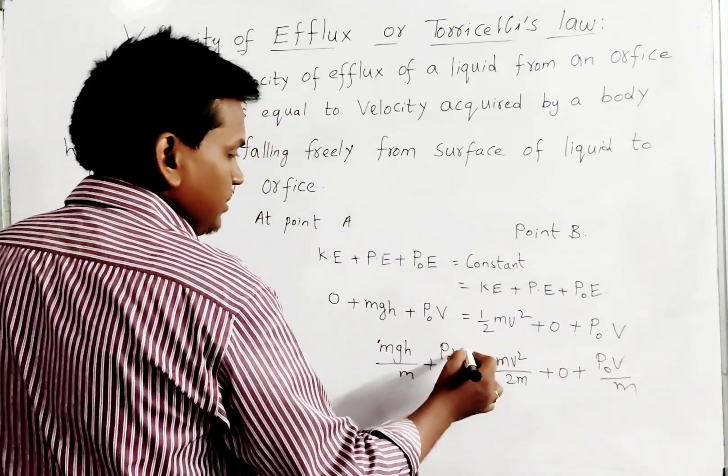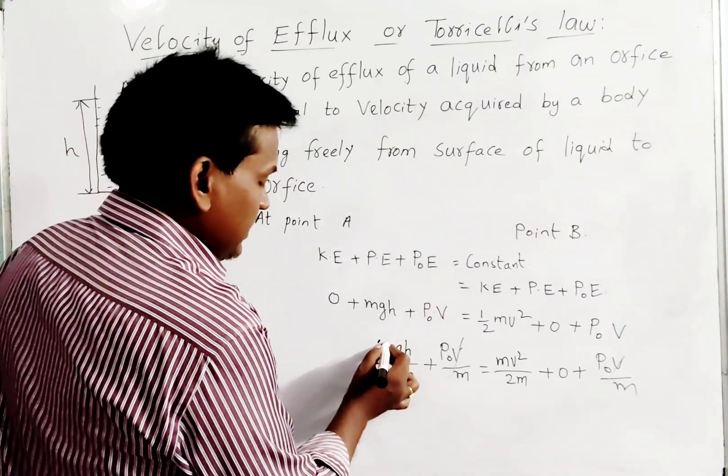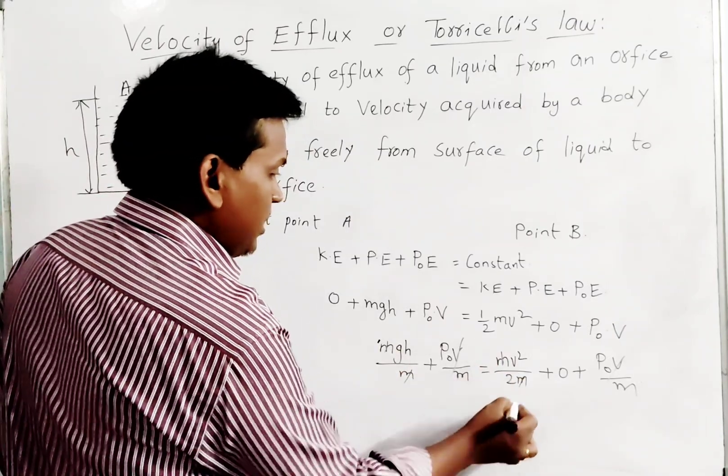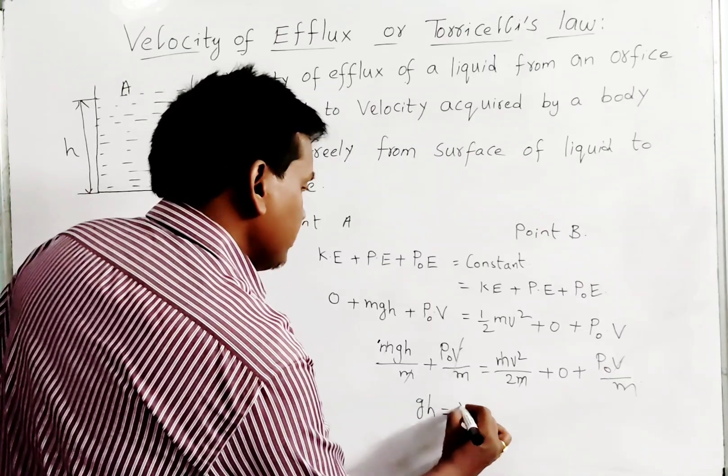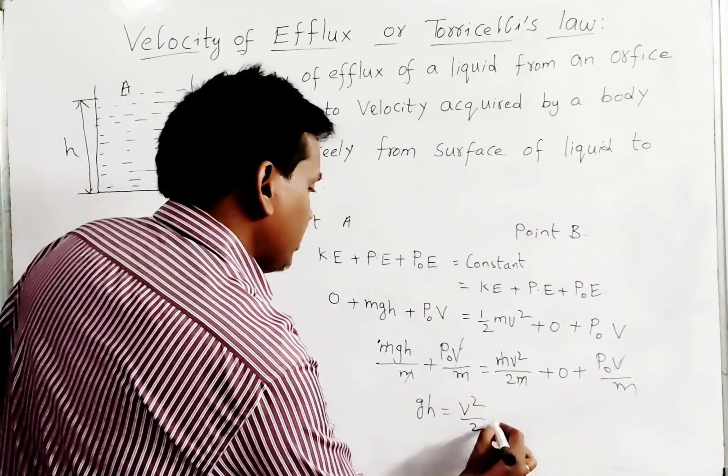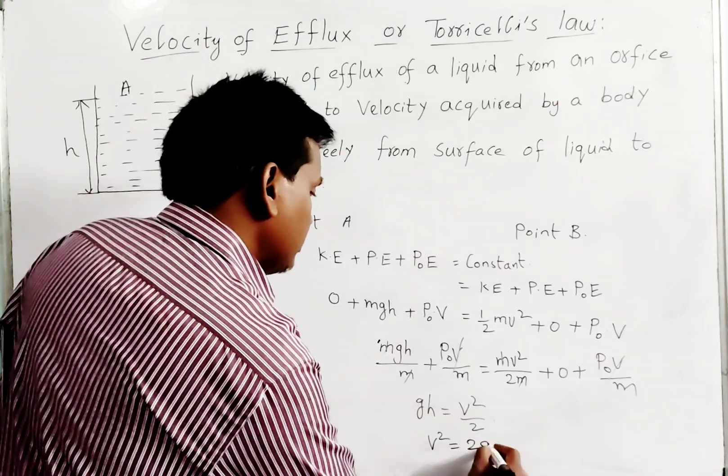P₀V/M on both sides, so we can cancel this. We can take out M, so we will have gh equals V²/2, or V² equals 2gh.